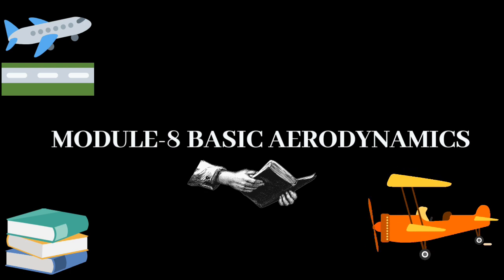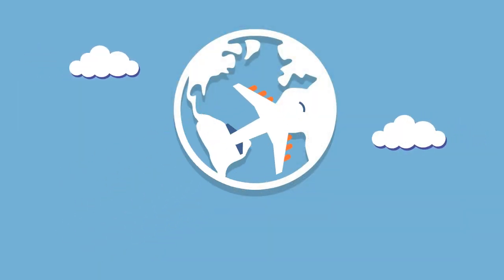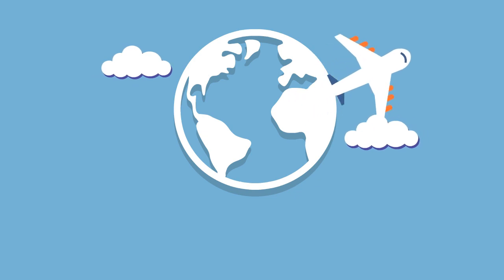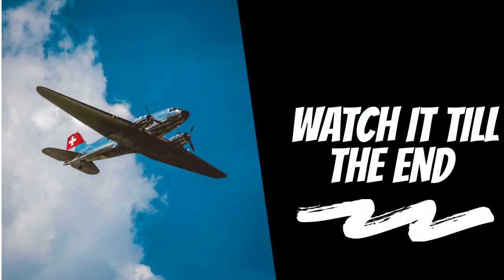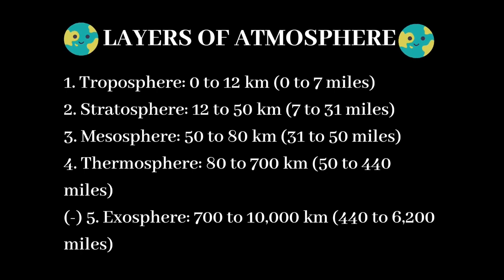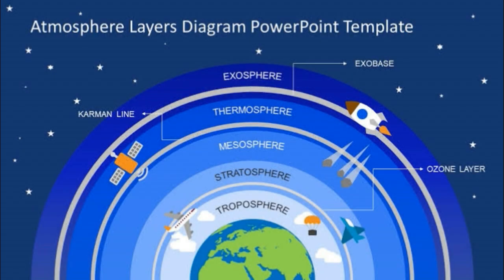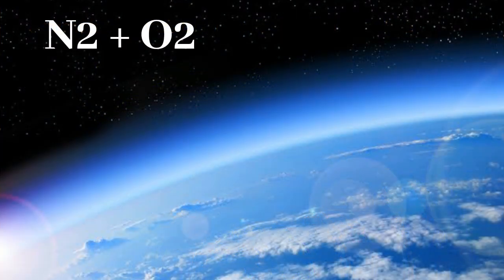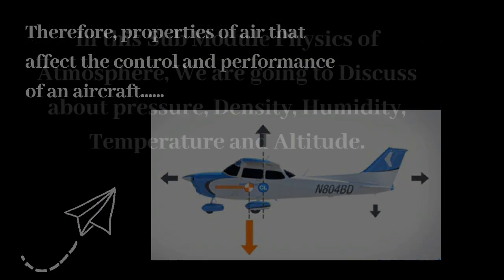Let's get started with our topic: Module - Basic Aerodynamics. The atmosphere plays an important role in the study of aerodynamics. Aerodynamics is the study of how air travels around something moving through it. The interaction between a moving object — that is, an aircraft — and the atmosphere is the primary interest in this module. Today we are going to discuss 8.1: Physics of Atmosphere. Earth's atmosphere can be divided into five main layers. Excluding the exosphere, the atmosphere has four primary layers: the troposphere, stratosphere, mesosphere, and thermosphere. Aircraft operates in air, and the air in the earth's atmosphere is mainly composed of nitrogen and oxygen. Therefore, the properties of air that affect the control and performance of an aircraft are key topics.